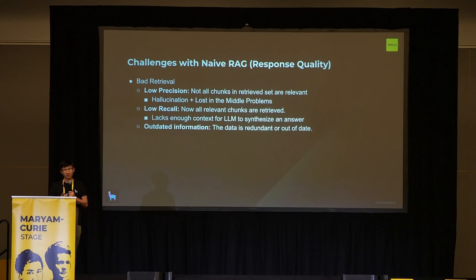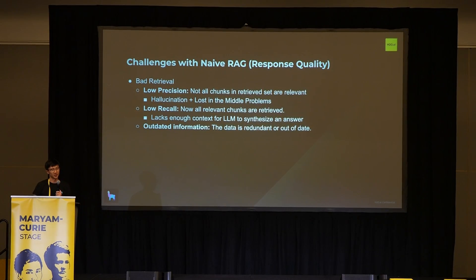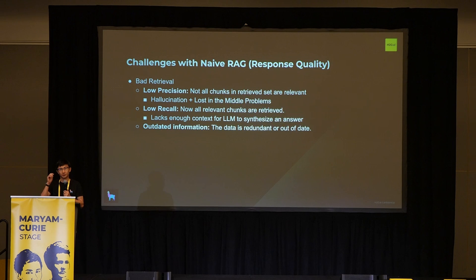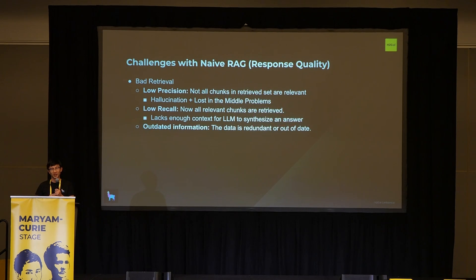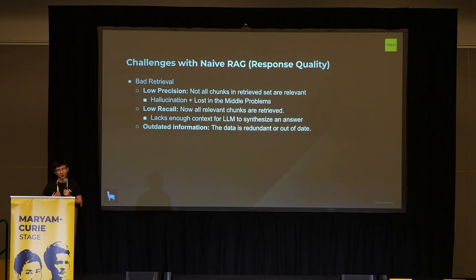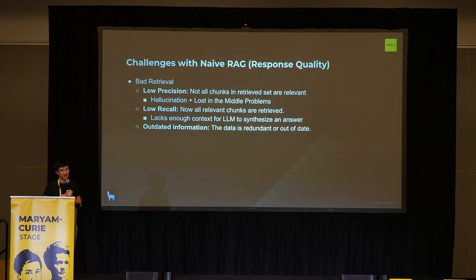There are a few aspects of bad retrieval. There is low precision — not all of the chunks in the retrieved context are relevant — which leads to hallucination and loss-in-the-middle problems. There's also low recall: not all the relevant chunks are retrieved. You might retrieve some set of items but miss actual context you should have retrieved, and if you don't retrieve that, the LLM can't synthesize something correct. You might also have outdated information. Basically, you're not getting back the results you want depending on the task at hand.